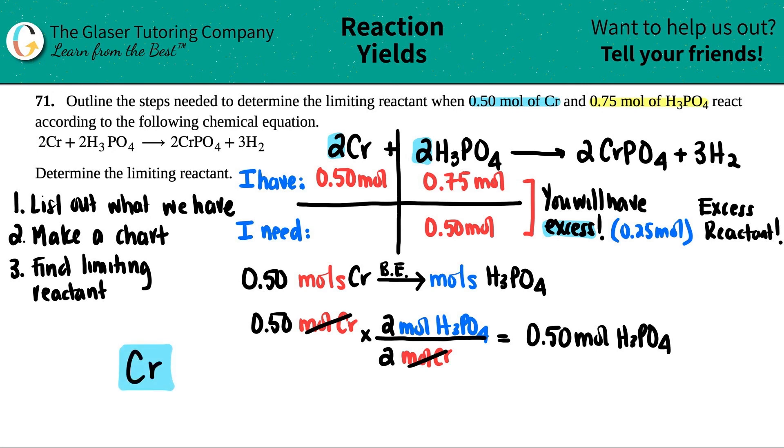So there's the answer, guys. Cr is the limiting reactant. Thank you so much for viewing the video. I really hope this helped. Let me know in the comments, okay? Love helping you guys out. And I hope you guys are doing well out there. Subscribe to the channel if you want to help us out. And tell your friends, all right? I'll see you in future lessons. Bye-bye.